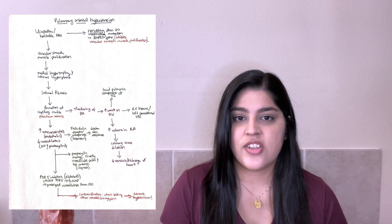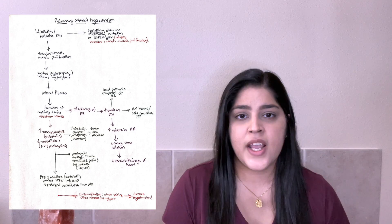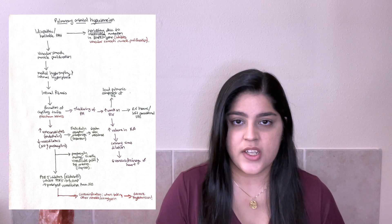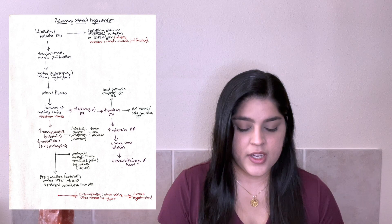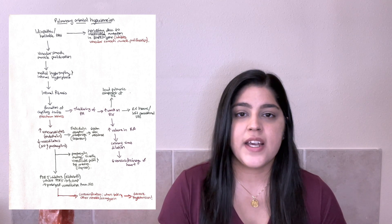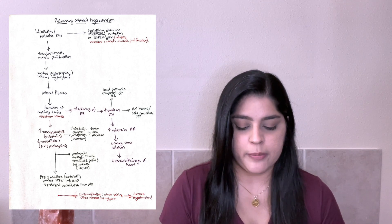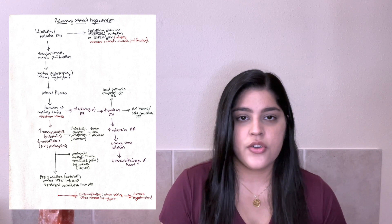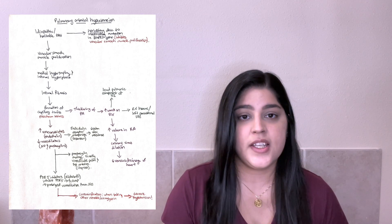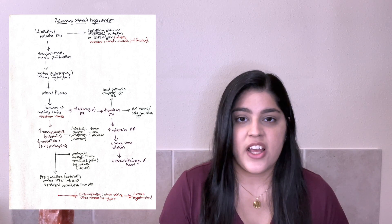I have plexiform lesions highlighted in red. Often when key words come up like this, I like to put them in red so I pay more attention to them and remember the specific name, like plexiform lesions in this case. Going to the side, we have thickening of the pulmonary artery, which will cause increased work on the right ventricle. Because of this increased work, I have two clinical signs that come up in green: a loud pulmonic component of S2, and a right ventricular heave as well as a left parasternal lift.